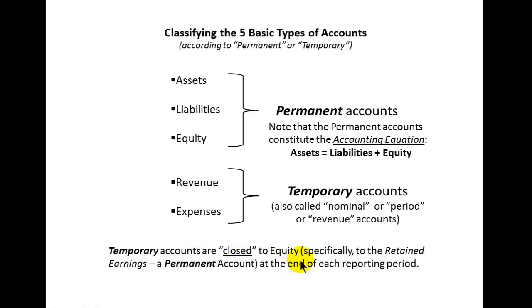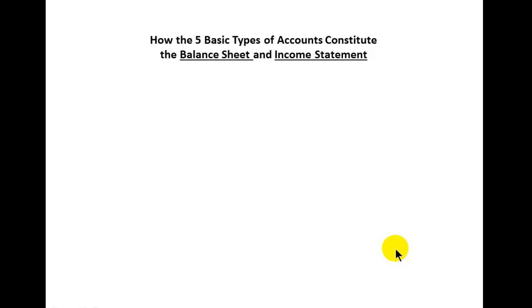Temporary accounts are closed to equity — specifically the retained earnings account, which is a permanent account — at the end of each period. In your introductory chapter they talked about a sole proprietorship and that person's capital account, but when you talk about corporations, that's when you get into the concept of retained earnings. The other two major financial statements you'll encounter later are the statement of cash flows and the statement of changes in owner's equity.